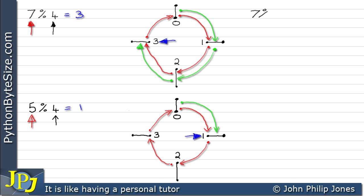Let's have a quick look at this again. 7 modulus 4: 4 goes into 7 once, and we have a remainder of 3. If we look at this one down here, 5 modulus 4: 4 goes into 5 once, with a remainder of 1.